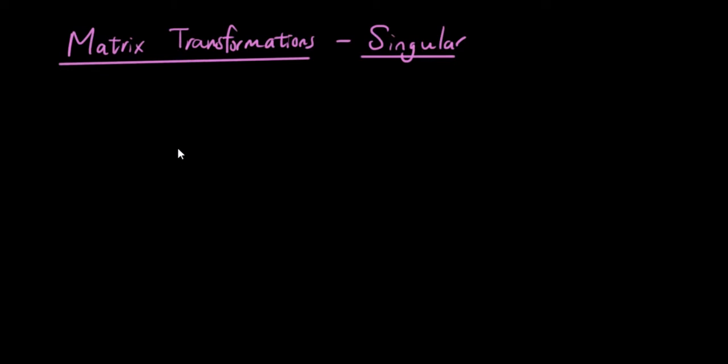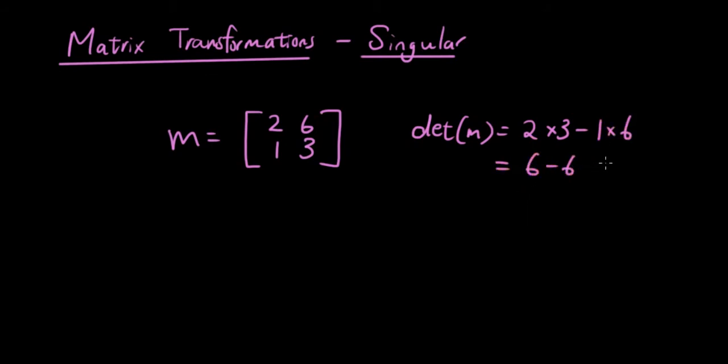So I'm just going to give you guys an example. Let's say that this is my transformation matrix. If you try to find the determinant of this matrix, you will get 2 times 3 minus 1 times 6, which is 0.